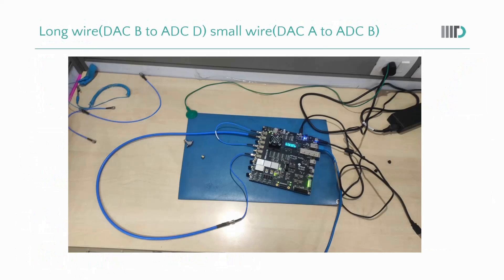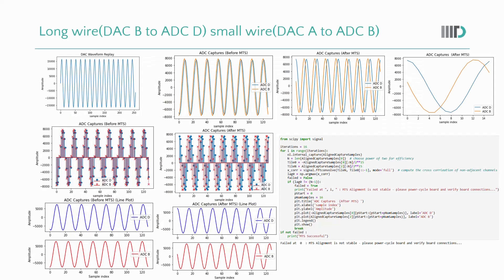In this configuration, we use a longer wire with DAC-B connected to ADC-D and DAC-A connected to ADC-B. The DACs are on different tiles and the ADCs are also on different tiles. As you can see in the plot, after MTS the plots are still not aligned, again because MTS only handles digital delay and not the analog delay caused by different wire lengths.